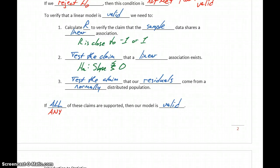If any of these claims are not supported, then our model is not valid, and it doesn't really make any sense to carry on with this regression process. Because we would be making predictions based off a model that's inaccurate, leading us to incorrect results.